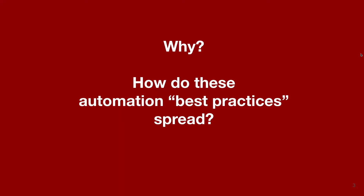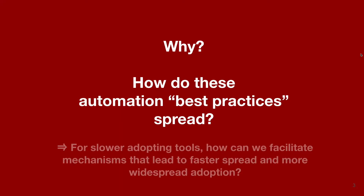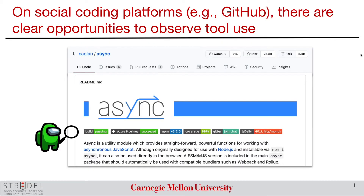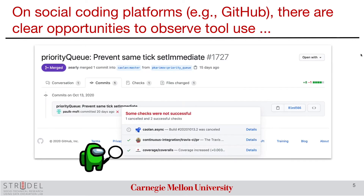More importantly, how do these automation best practices spread? With the advent of social coding platforms such as GitHub, we have been given opportunities to observe the practice of tool adoption more easily. For example, these tool automations are often seen by visual signals such as badges in repositories, and such signals can be monitored to model adoption.